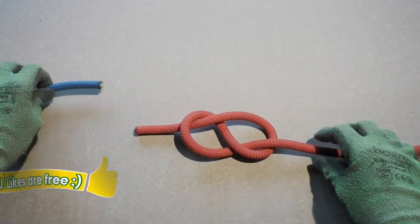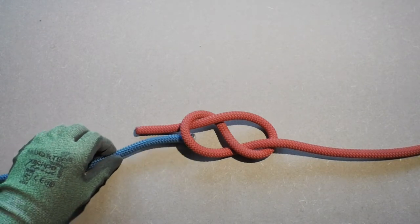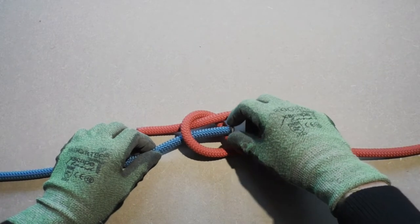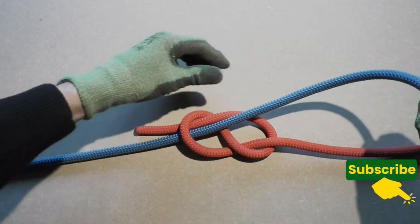The next step in tying the Figure 8 Bend is taking the other line and then retracing the knot we tied first. The Flemish Bend or Figure 8 Bend is very similar to the Figure 8 Follow Through knot.